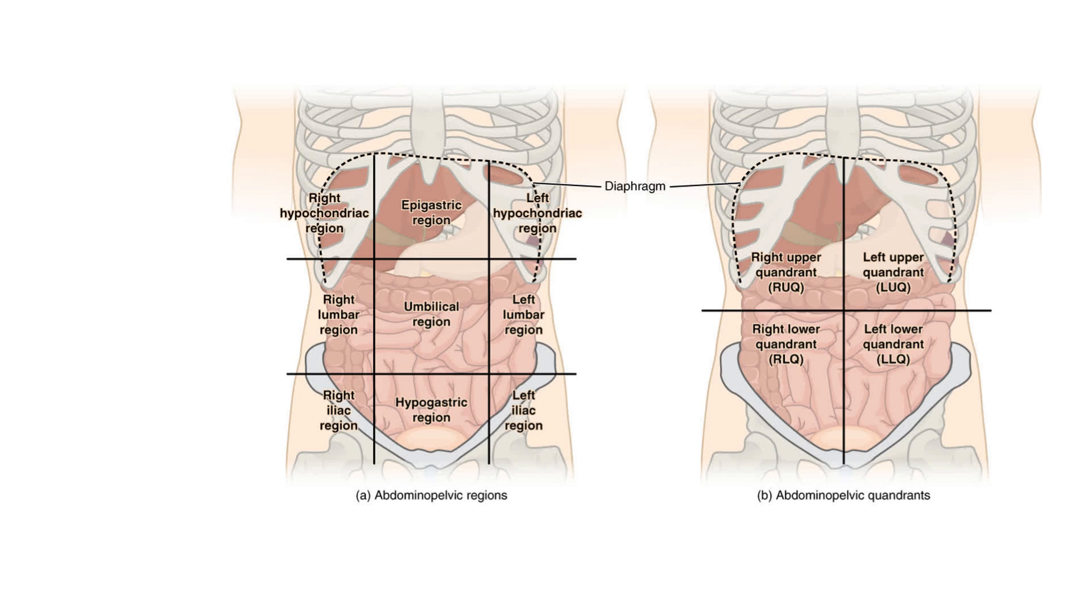Abdominal divisions are used to describe the locations of pain, injuries and abnormalities in the abdominal area. There are essentially two ways to divide the abdomen, which include the four-quadrant method and the nine-abdominal regions method.